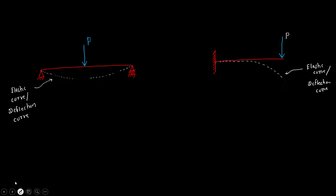Now what is slope and what is deflection? Let's take a point A on the beam. This point A is on the original beam before the load P is acting. After loading, the beam bends and point A shifts to a new location, which we name A dash. The distance between the original position of point A and its position after loading is called deflection — deflection at point A.